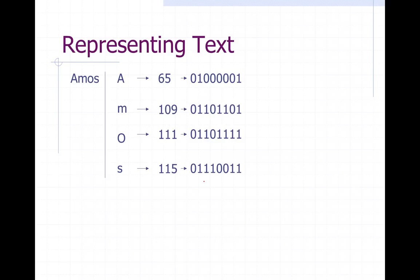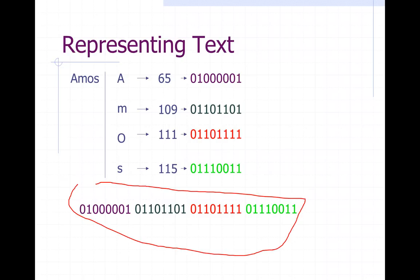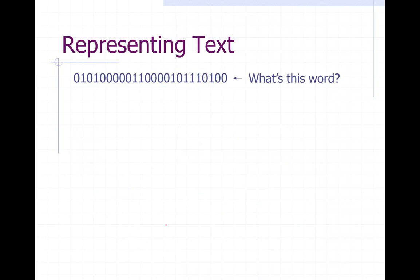We do the exact same thing with all the other letters: lowercase m is 109, lowercase o is 111, and lowercase s is 115 — each converting into its eight-bit number. Then you put it all together in sequence and you have my name in binary. You can do this with any word in the English language: break it down by character, look up the number, convert to binary, and write them out in sequence.